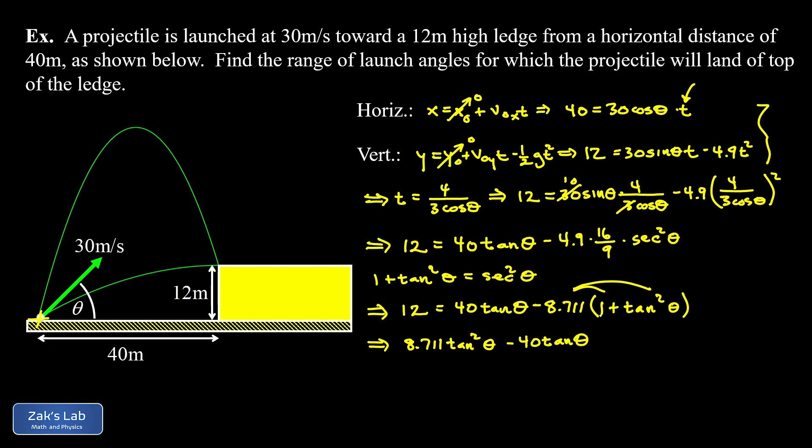And then my constant, I have -8.711 on the right side of the equation. So when I move that to the left, I'm adding that to 12 and I get 20.711 and that's all equal to zero.